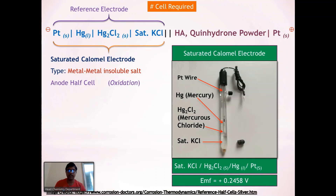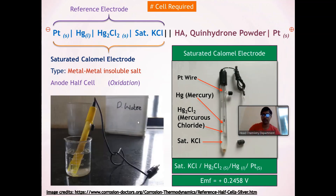The saturated calomel electrode consists of a platinum wire connected to mercury, followed by solid mercurous chloride (a white solid), and the remaining portion is filled with saturated KCl solution. The known EMF of the saturated calomel electrode is +0.2458 V. When connected to the other half cell through the salt bridge, the saturated calomel electrode is dipped into a beaker containing saturated KCl solution, and this whole setup is called the saturated calomel electrode.